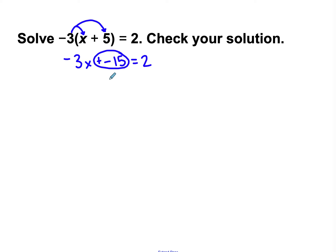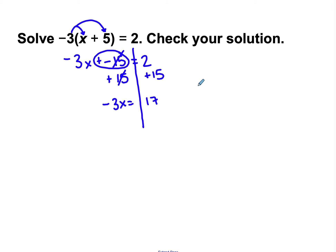I'm canceling out the negative 15. To get rid of it, I add a positive 15, because negative 15 plus positive 15 equals 0. I'm going to add 15 to both sides. I'm left with negative 3x on this side, and 2 plus 15 is 17. Then I divide both sides by negative 3 to get rid of the multiplication, keeping the sign. Negative 3 divided by negative 3 is 1, so I'm left with 1x.